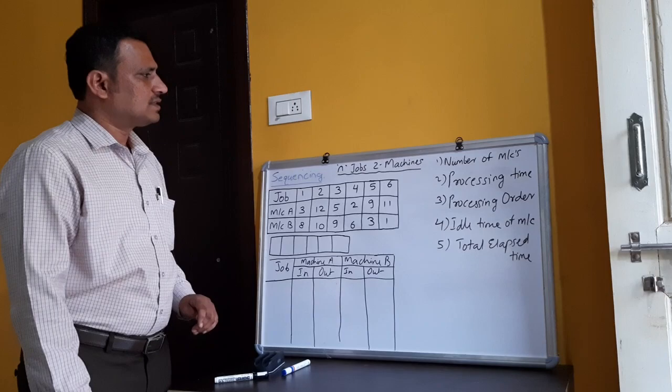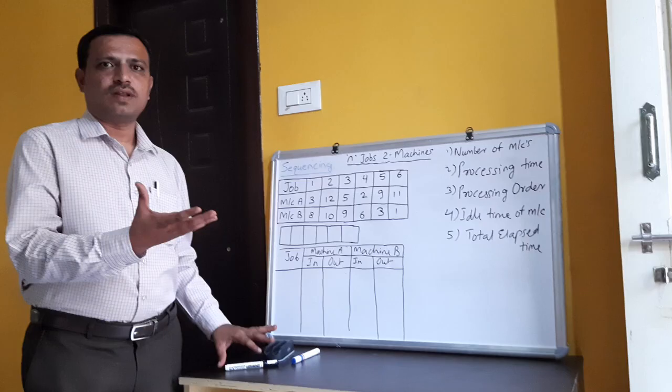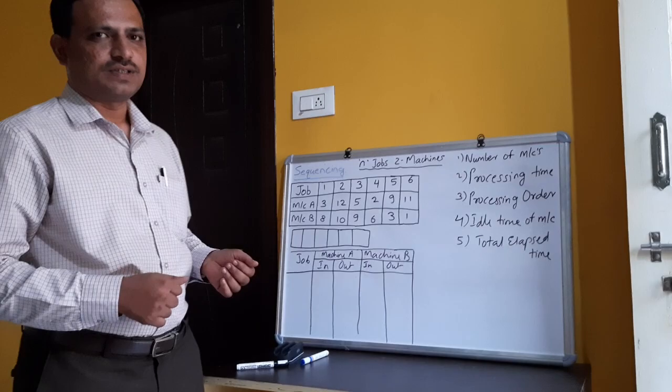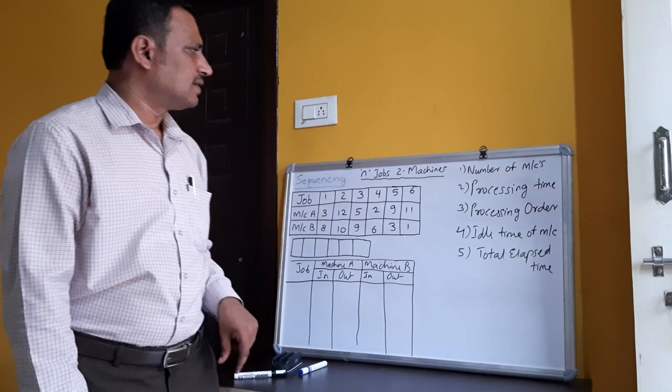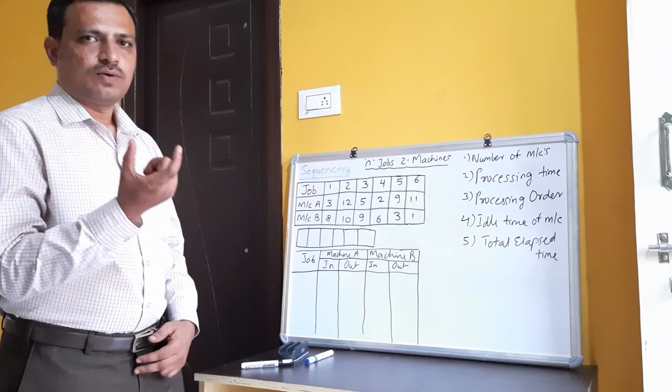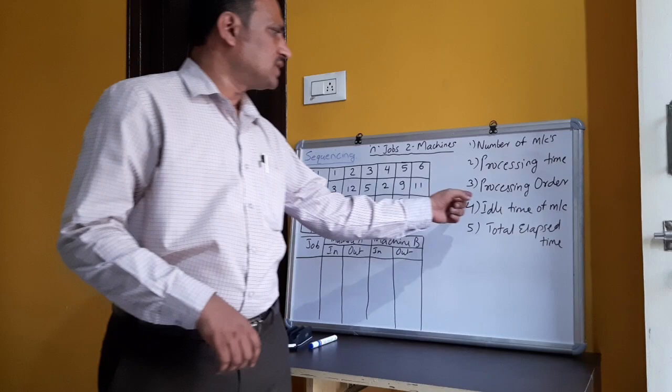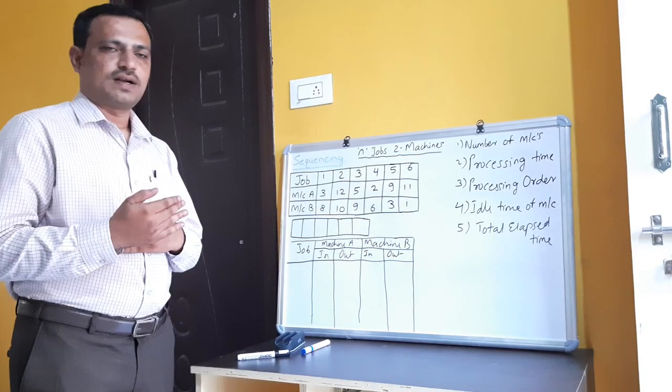The first terminology is number of machines — how many resources or machines are available, say one, two, three, etc. Next is processing time, which means how much time it takes to complete one job. Next is processing order, which means what is the first job and what is the next job — that is the processing order.